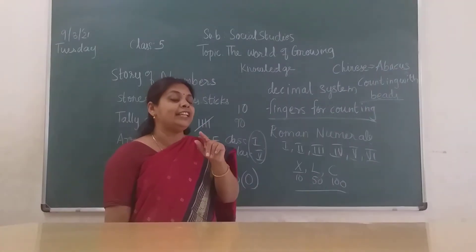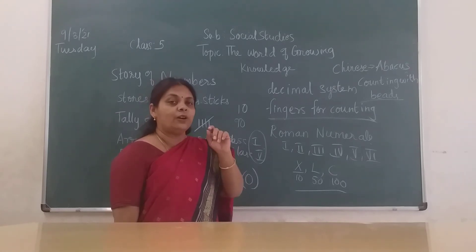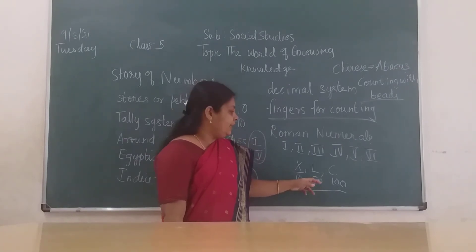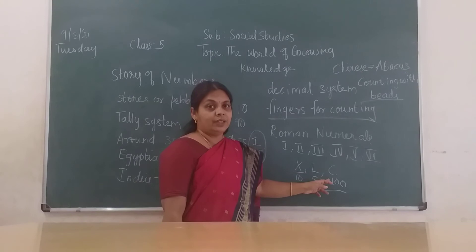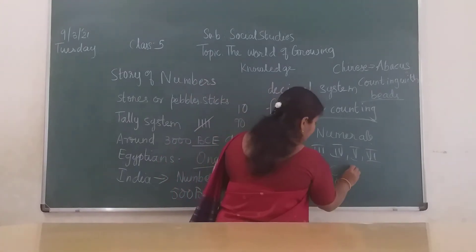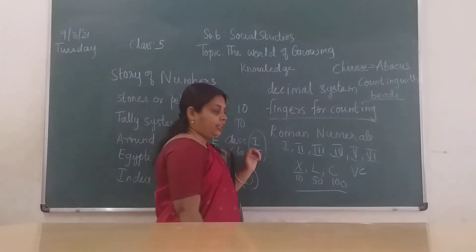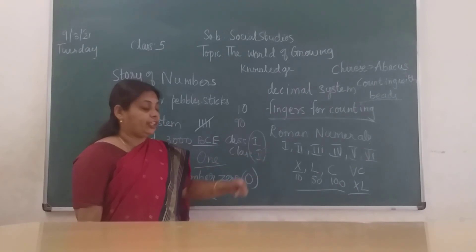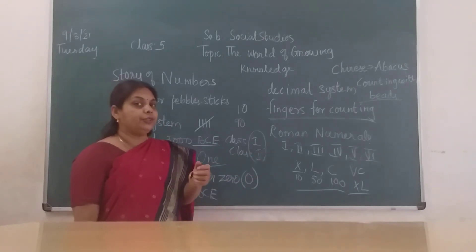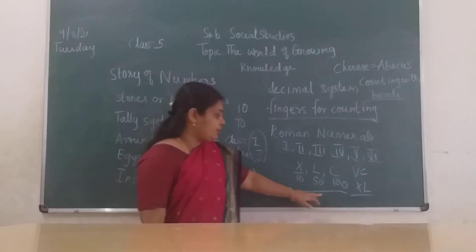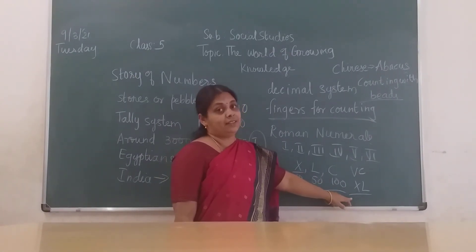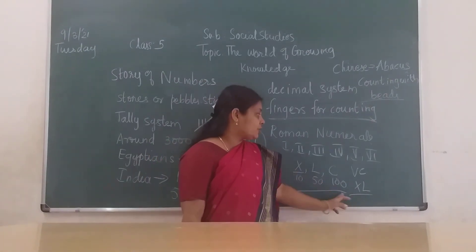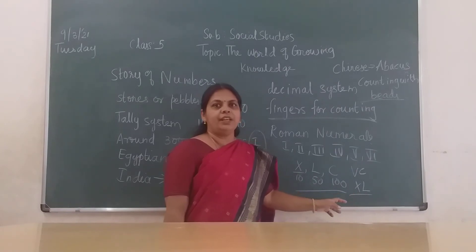Roman numerals are still used in everyday life — for example, on vehicle engine CC ratings you see XL, and in clothing sizes: Small, Medium, Large, XL, XXL. XL means 40 in Roman numerals. So Roman numerals are still being used in many places today.